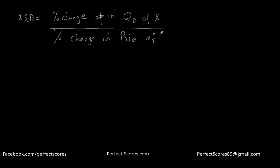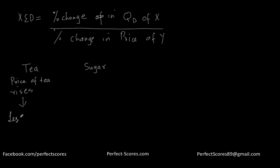Let me take a very simple example. Let's suppose I talk about tea and sugar. If the price of tea rises, people are going to consume less tea — let's say one tea bag costs a million dollars, so very few people would buy it. Because tea and sugar go hand in hand, there would be less consumption of sugar as well.